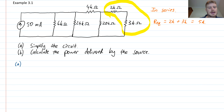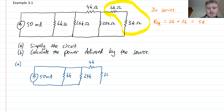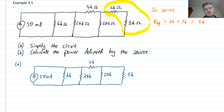So let's jump in and do that — this is my working for part A. I'm going to redraw the circuit with that part simplified. I have a 6 kilo ohm resistor, a 24 kilo ohm resistor, 4 kilo ohms, 20 kilo ohms, and the bit I just simplified is now 5k. Good — we're making some progress.